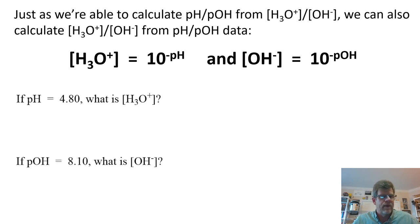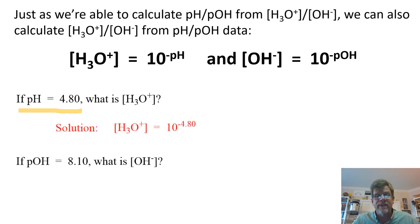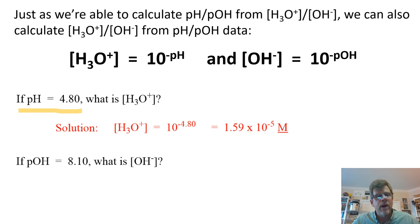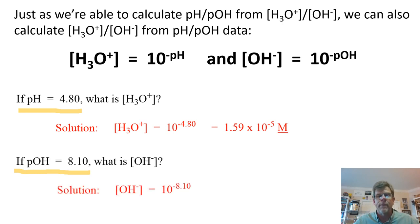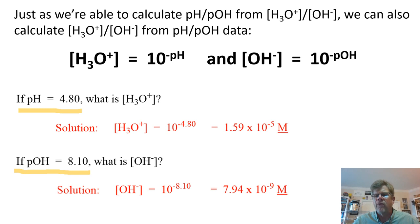Here are a couple of example problems. If the pH is 4.80 of a solution, what is the hydronium ion concentration? We take 10 to the exponent negative 4.80 and come out with 1.59 times 10 to the negative fifth molar. If the pOH of a solution is 8.10, what's the hydroxide ion concentration? We set base 10 to the exponent of the negative of that pOH, and this is what comes out of our calculator. We're very easily able to swap between them.